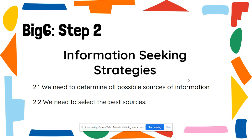Step number two is information seeking strategies. Now we need to determine all the possible sources of information. I can get information from a video, from a website, from a library book, from databases. Where can I get all possible sources of information? And secondly, after we think of all those, we need to select what is going to be my best source of information for this particular research assignment.